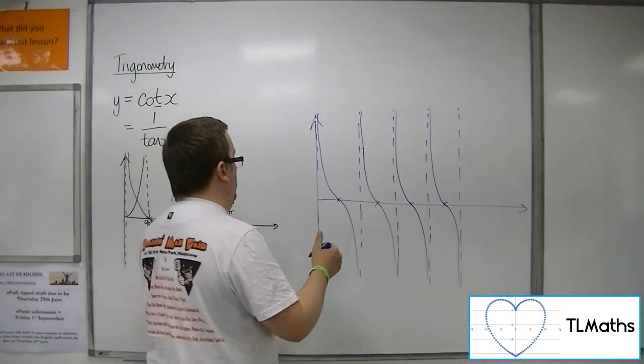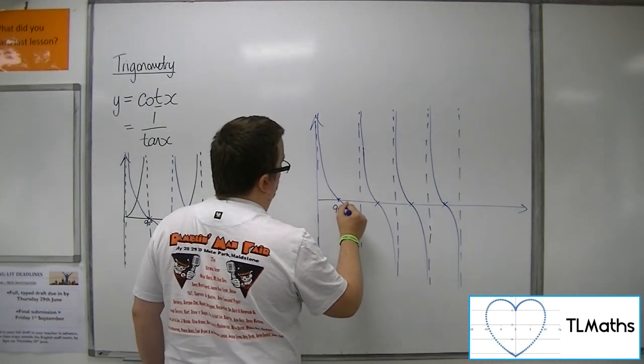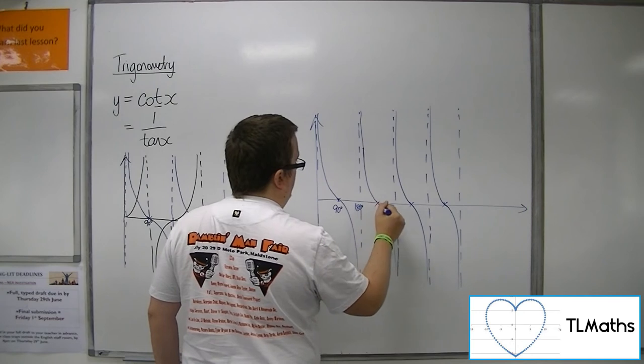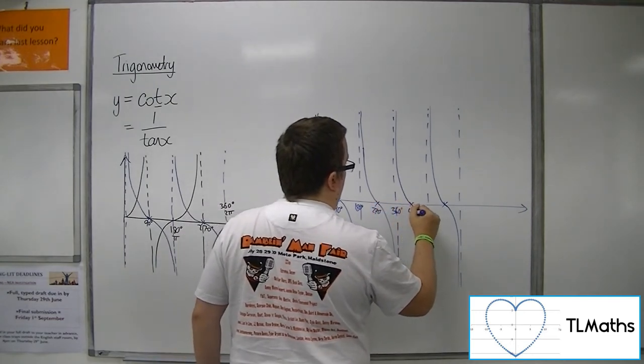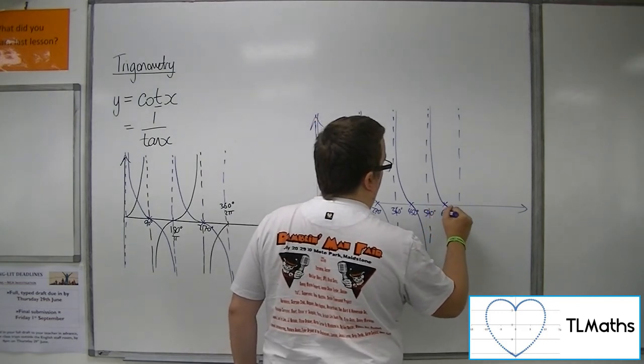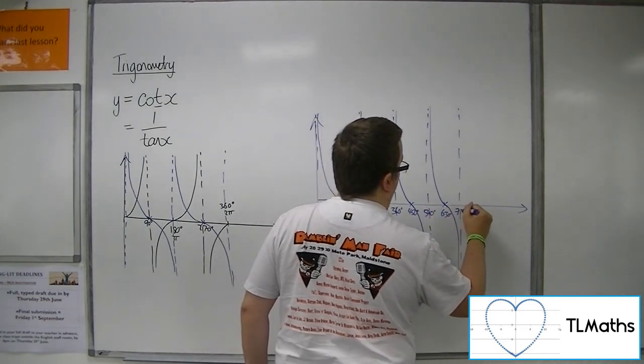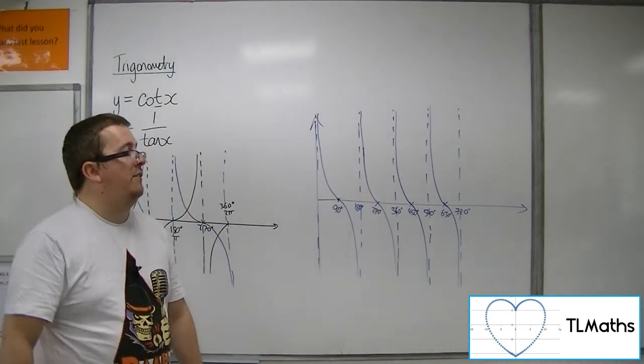So this is cot, where this is 90 degrees, there's 180, there's 270, there's 360, 450, 540, 630, 720. So there's the curve between 0 and 720 degrees.